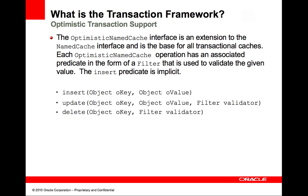The transactional framework introduces new operations for the support of optimistic transactions. Each operation has an associated predicate in the form of a filter that is used to ensure that the value being updated is the expected value. Update and delete operations have explicit predicates while the insert has an implicit predicate. Typically when a value is read and later modified in the scope of a transaction, a predicate is supplied to ensure that the value being modified is the same value that was previously read.